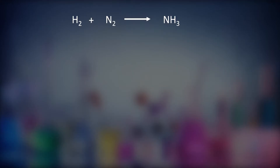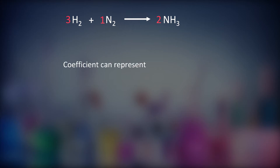For example, H2 when reacts with N2 gives ammonia, NH3. H2 has a coefficient of 3. The coefficient of N2 represents a specific amount of each substance. So let's see the ratios of reactants and products in the reaction.